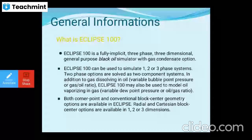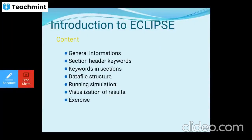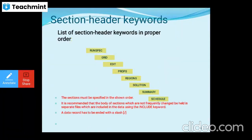Corner point geometry (CPG) and conventional block center geometry options are available in Eclipse. Radial and Cartesian block center options are also available in one, two, or three dimensions. The steps we cover today include general information, section header keywords, input data structure, running the simulation, and getting results.